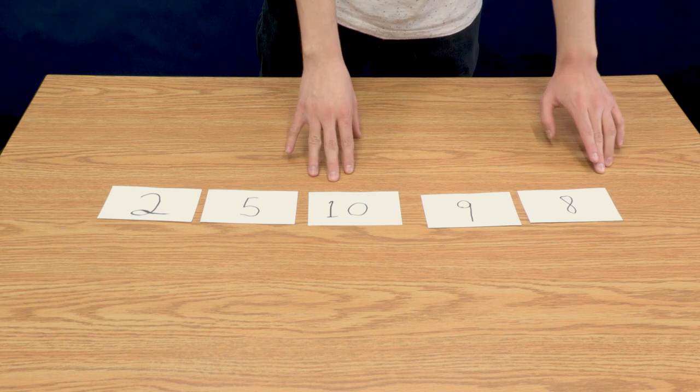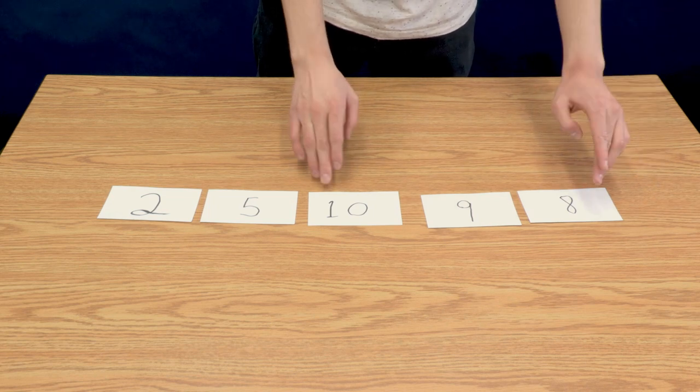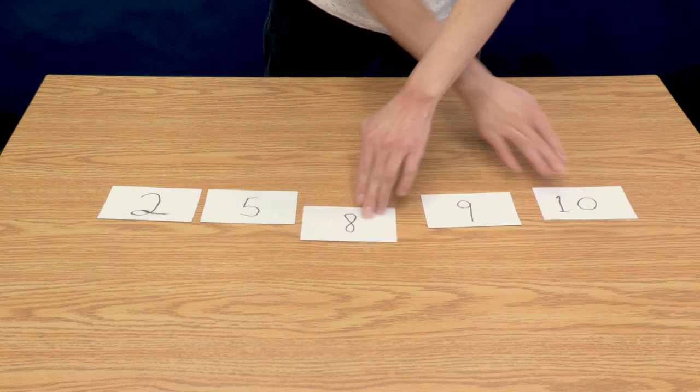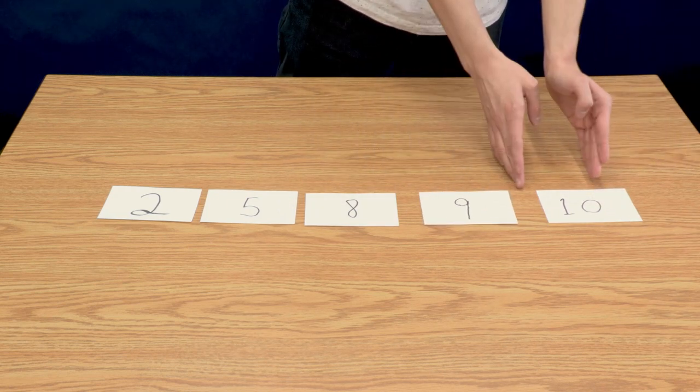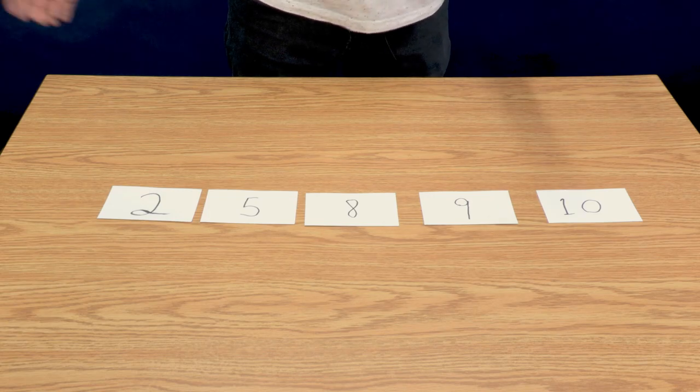And then I'll see these other numbers and take the smallest number and swap it out for this 10. And then is this the smallest number from here on? Yes. And there we go. We have the numbers sorted in ascending order.